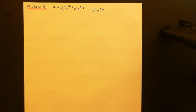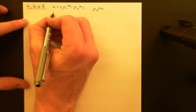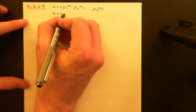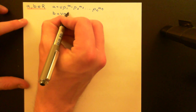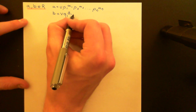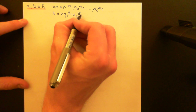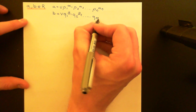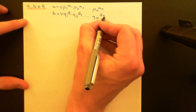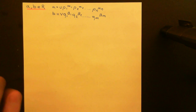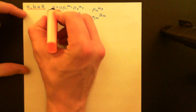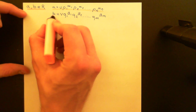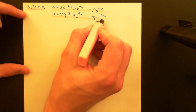There's our prime factorization of A. And for the prime factorization of B, we'll have a unit V, then Q1 as our first irreducible to the power of beta 1, Q2 to the power of beta 2, and then all the way along to Qm to the power of beta m. So here are the prime factorizations of these two elements A and B, and we're now going to try and understand what the greatest common divisor of these two elements is going to be.